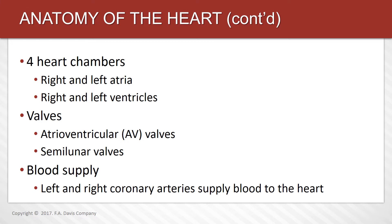The heart needs valves to facilitate one-way blood flow. The AV valve between the right atrium and the right ventricle is called the tricuspid valve. The valve between the left atrium and the left ventricle is the bicuspid or mitral valve. The pulmonary valve is located between the right ventricle and the pulmonary artery, and the aortic valve is located between the left ventricle and the aorta.